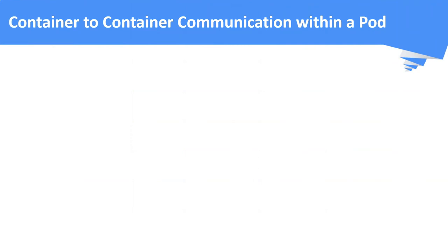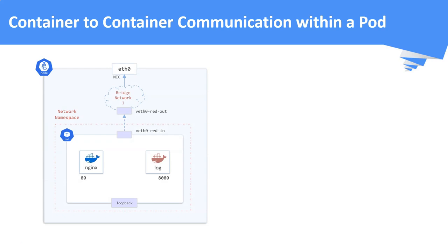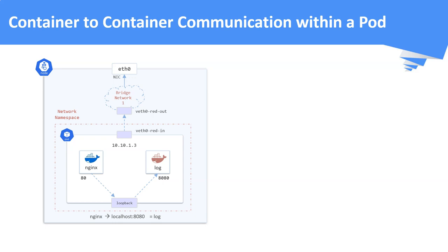Container-to-container communication happens through the pod's network namespace. Every pod has its own network namespace and the containers inside that pod share the same IP address and ports. All communication between these containers happens through the localhost or loopback interface. For example, when an Nginx container wants to reach a log container, it can simply call localhost:8080, where port 8080 is the exposed port number for the log container.